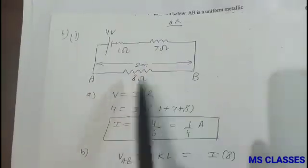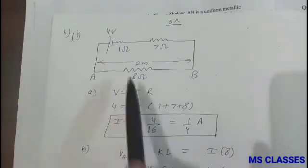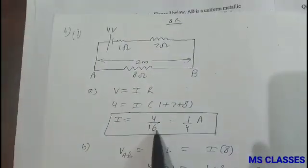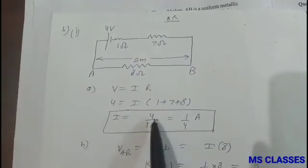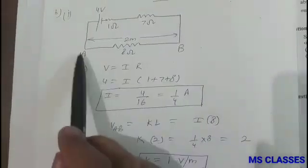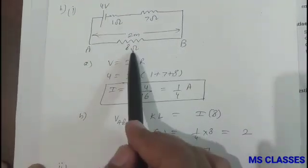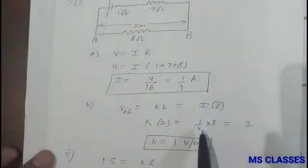So here you can see that 1, 7, and 8 all are in series. So V, that is I into the total resistance which is 16, so that I is coming 4 by 16 which is 1 by 4 ampere. Now across AB, that is KL, which is I into R where R is 8 ohm, I is 1 by 4, length is 2 meter.